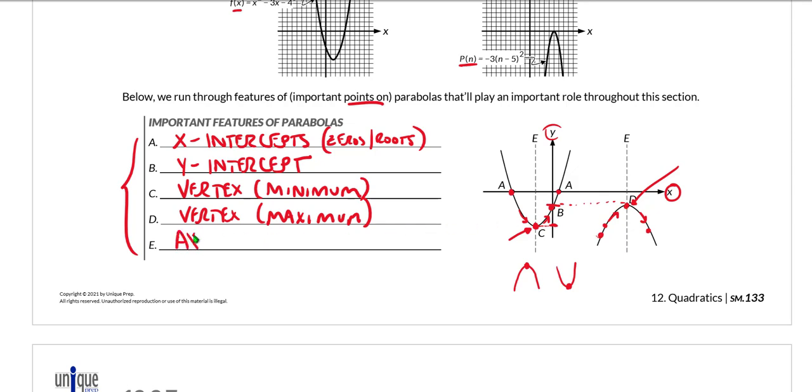Those are known as the axis of symmetry. We should understand that parabolas are always symmetric with respect to the axis of symmetry, with respect to the vertical line that goes through the vertex of the parabola.